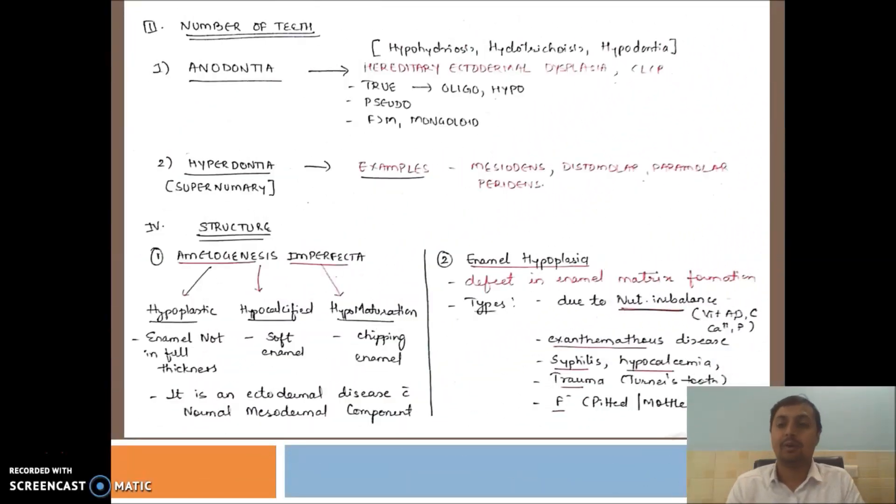Let's now focus on the number of teeth. You can see anodontia and hypodontia. What is anodontia? Anodontia can be true or partial. It means the number of teeth are less. Most commonly seen in case of ectodermal dysplasia.